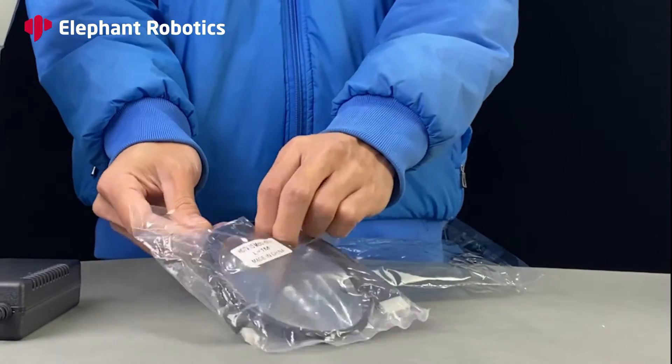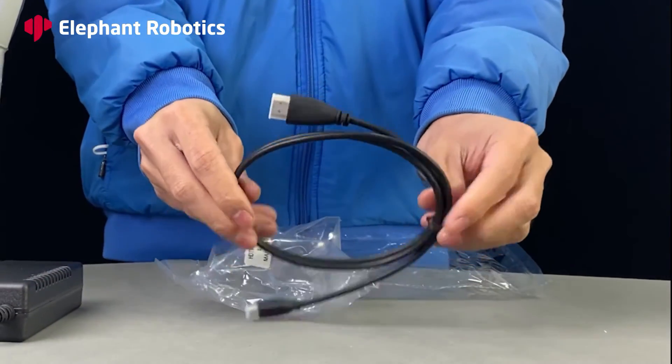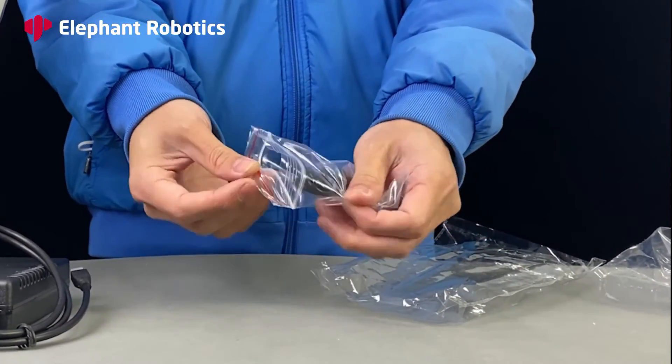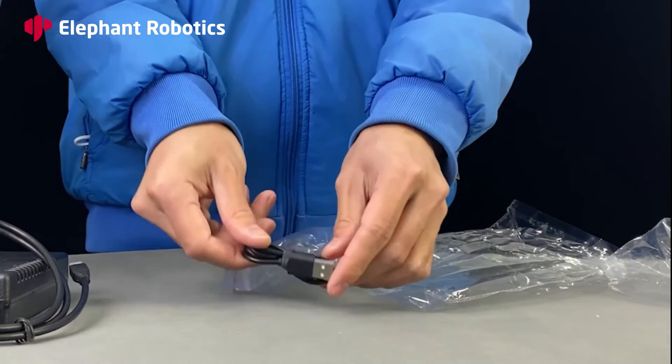This is a HDMI cable to link the robot arm to the monitor. And this USB Type-C cable, which connects the robot with the computer for software development.